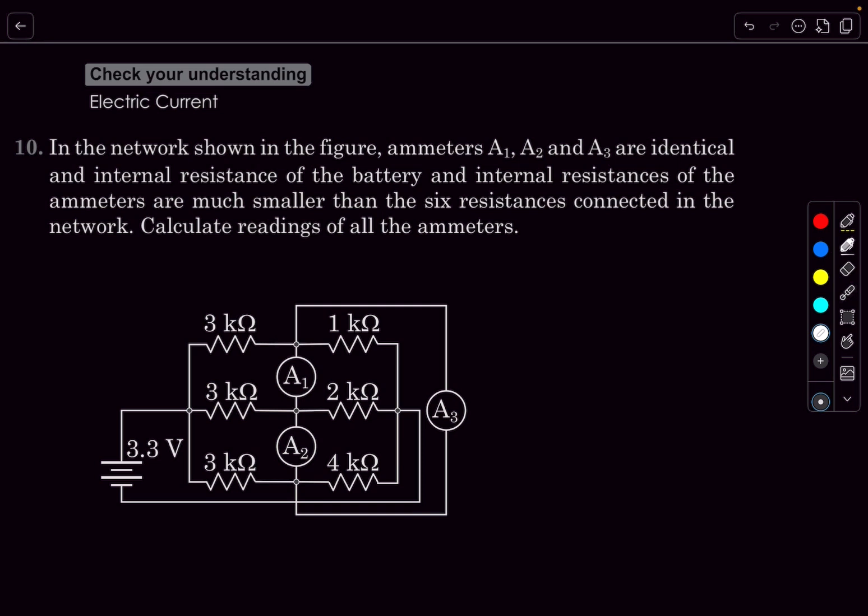Hello everyone, welcome back. In today's video we'll take up a problem from the chapter of electric current. A network is shown in the figure. We have ammeters A1, A2, A3 that are identical.